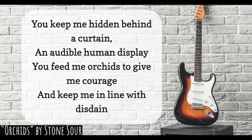Corey, we're ready for the answer. 'You feed me orchids to give me courage.' We really only need the first four words of this line. Subject is 'you,' verb is 'feed.' You feed what? You feed orchids. And who gets the orchids? Me. So 'orchids' is the direct object, and 'me' is the indirect object.